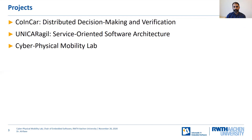The second project I would like to mention is Unica Agile. It is a large project funded by the German Federal Ministry of Education and Research, the BMBF. The project hosts partners throughout Germany. In this project, we focus on the research and implementation of a service-oriented software architecture for automotive purposes. I'm talking about these two projects because they interact with the Cyber-Physical Mobility Lab — for example, we test the algorithms and architecture developed within the projects in the lab.